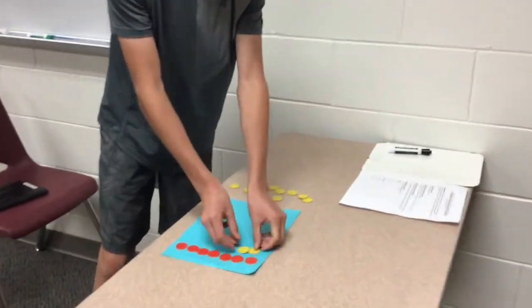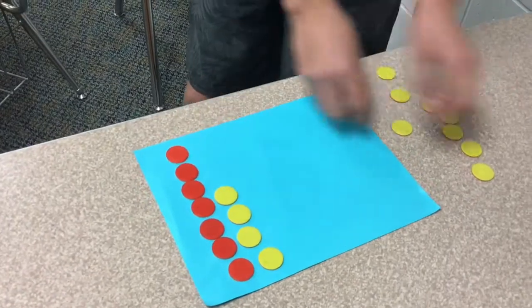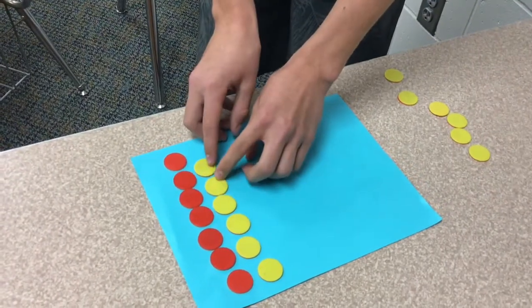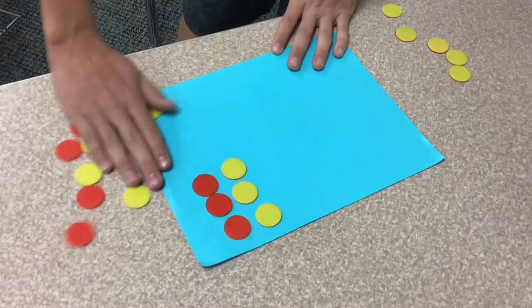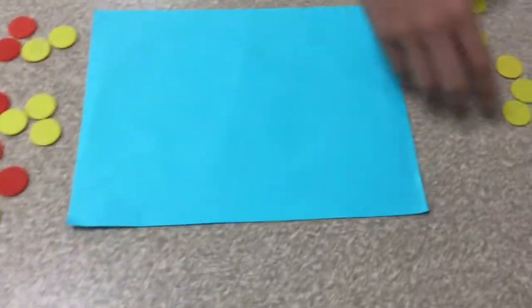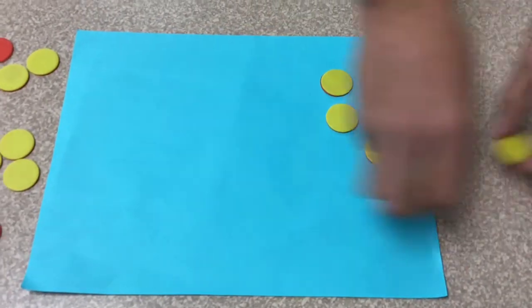So you need to make pairs of zeros. And this is all equal to zero so we can push this to the side now. And we're left with 5 positives.